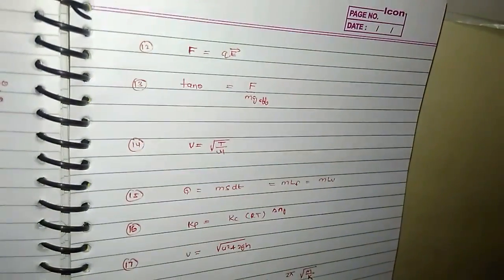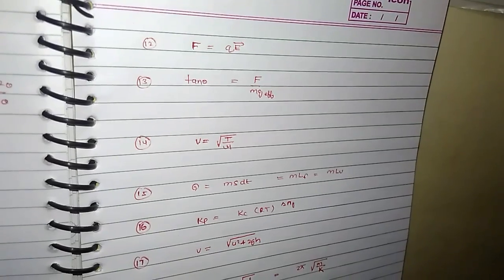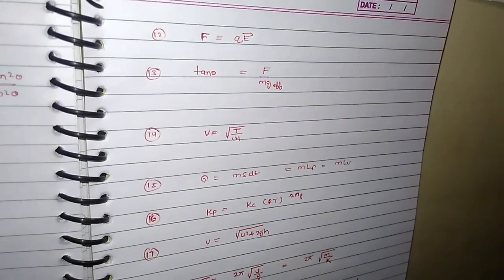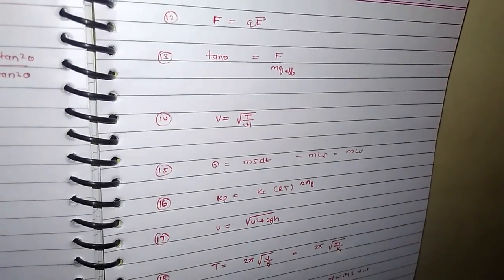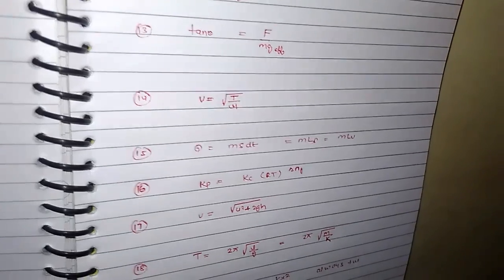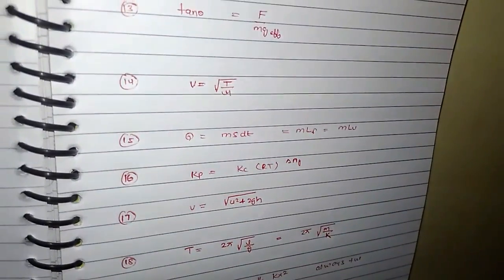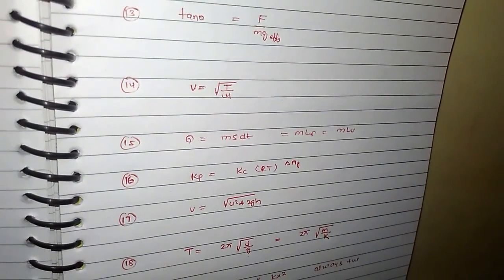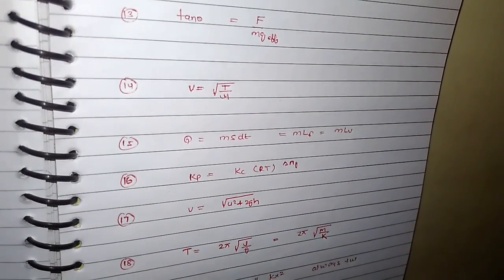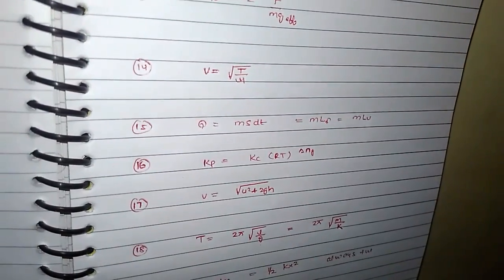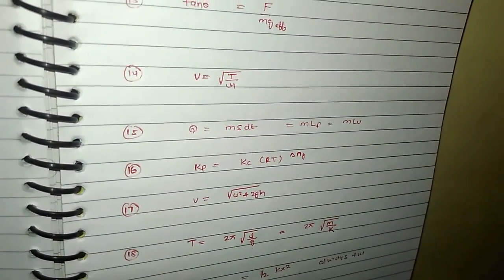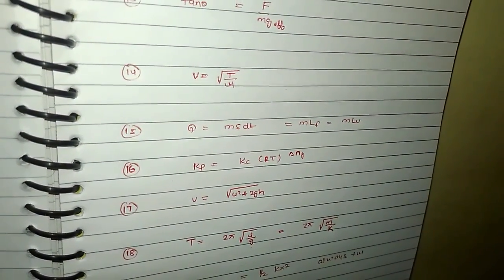F = QE (vector). tan θ = F / mg_effective. Wave speed v = √(T / μ). Heat: Q = ms·dT = mL_f = mL_v. Kp = Kc · (RT)^Δn.